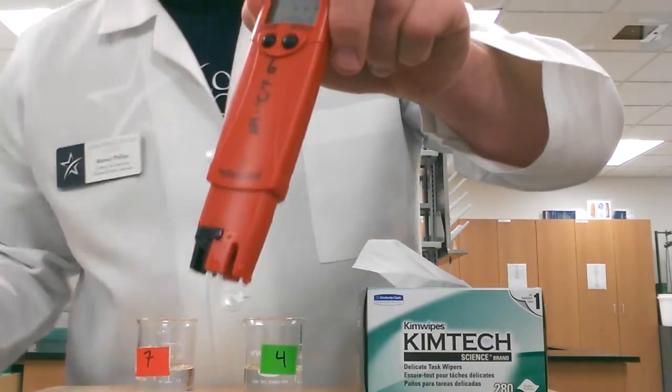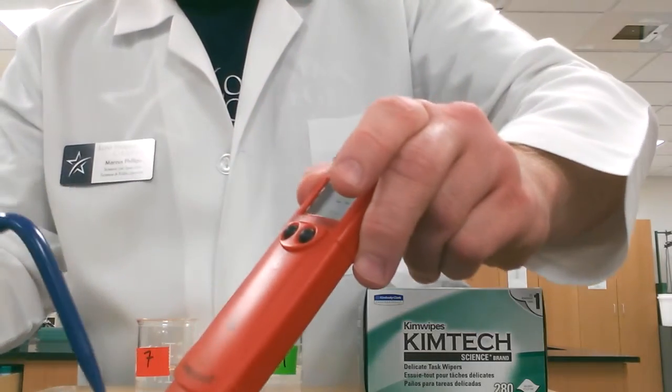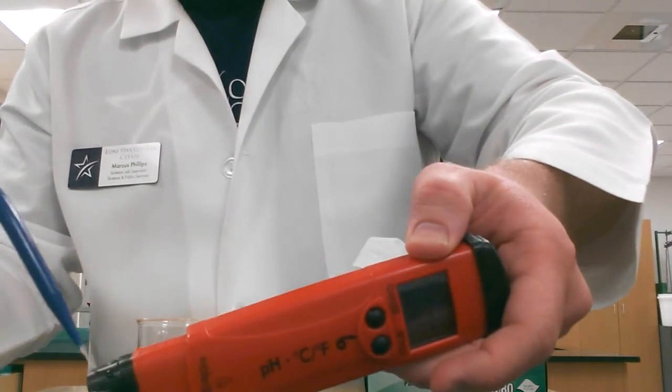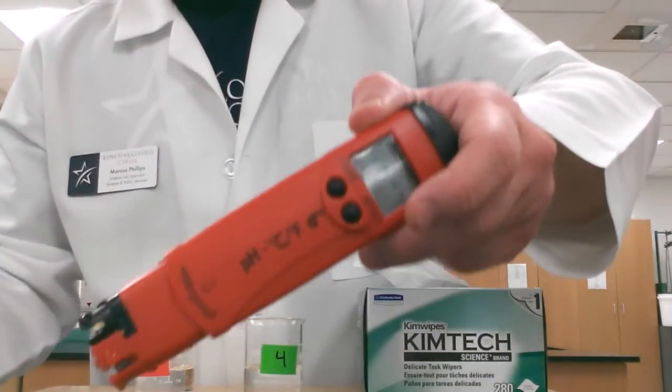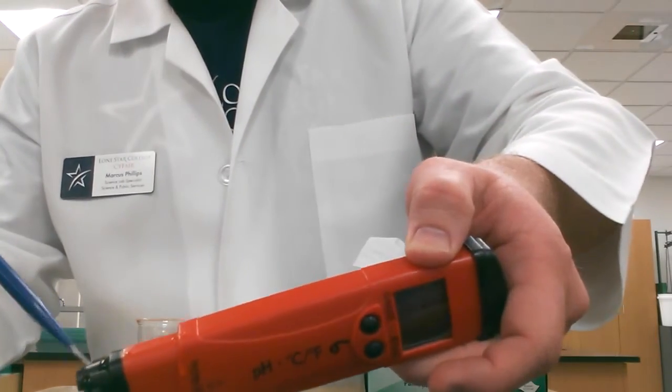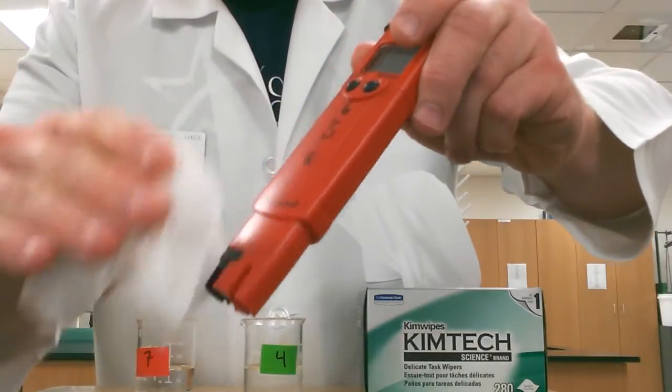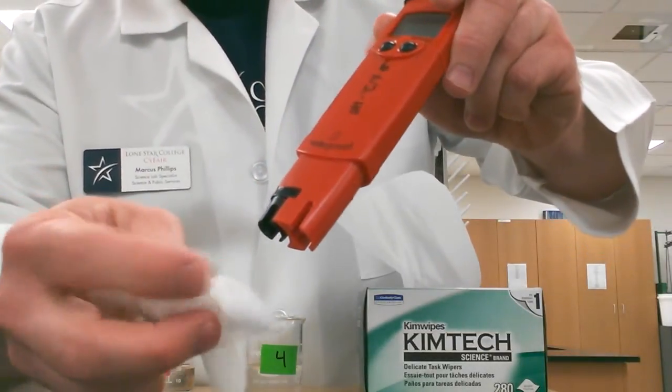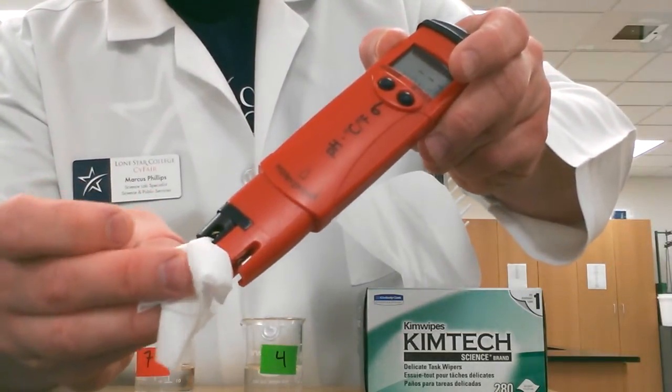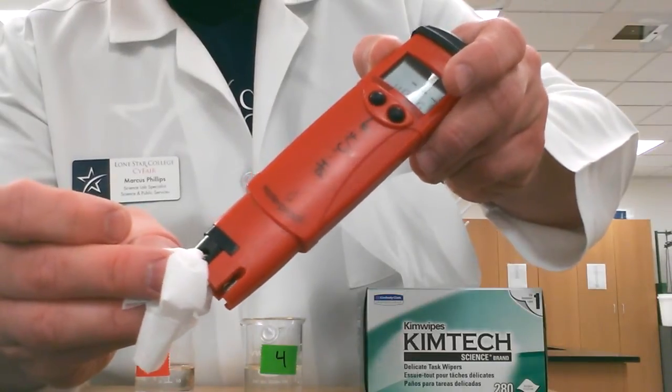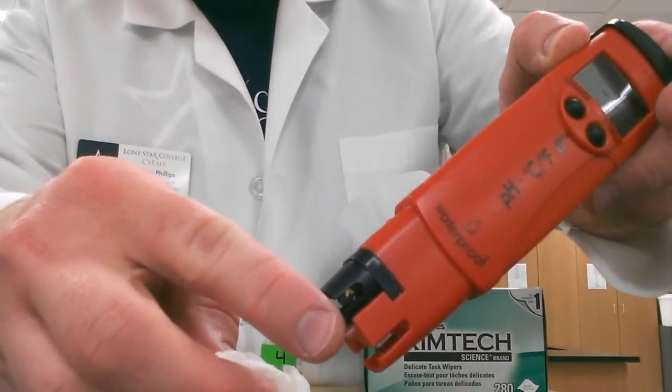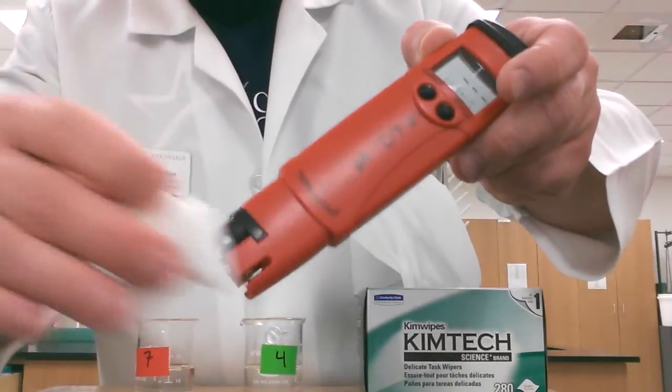We're going to rinse our electrode with the DI water all around it. So once we've got that nice and rinsed off, we can dry it with our Kim wipe and gently tap the small bulb that's here, that's the actual electrode. Get that nice and dry.